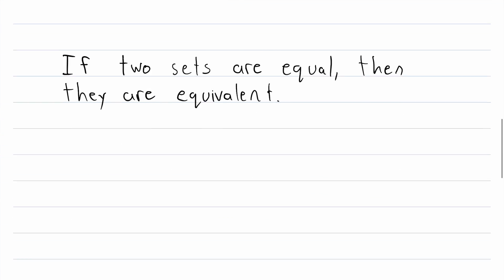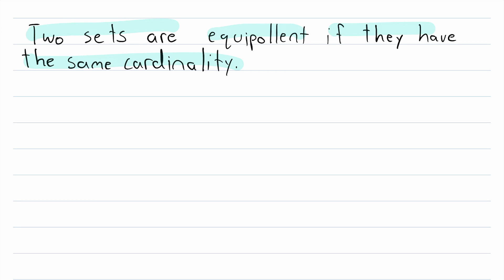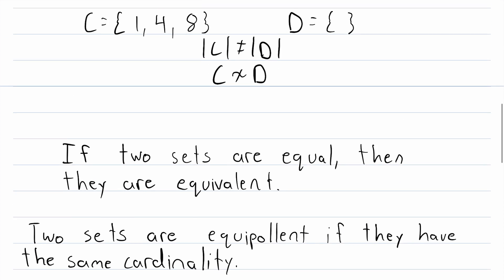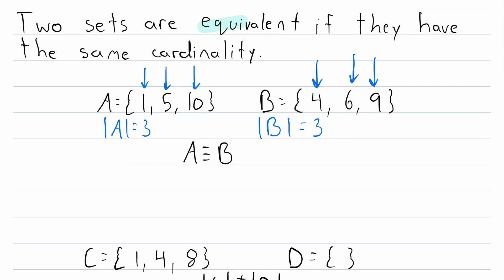Alternatively, if you wanted to, you could use a less common term. So this here is just a different word that always means the same thing in set theory. Two sets are equipolent if they have the same cardinality. So if you use this word, equipolent, then you're definitely talking about this definition. However, this word is a lot less common, so it might be more practical to just use the word equivalent.